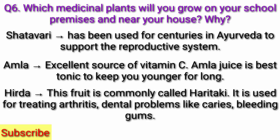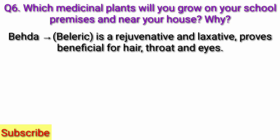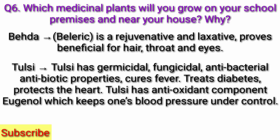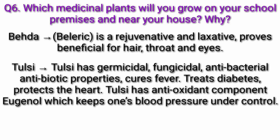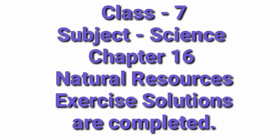Hirda (haritaki) — used for treating arthritis and dental problems like caries and bleeding gums. Beheda — a rejuvenative and laxative, beneficial for hair, throat, and eyes. Tulsi — has germicidal, fungicidal, antibacterial, and antibiotic properties; cures fever, treats diabetes, protects the heart; has antioxidant component eugenol which keeps blood pressure under control. Our class 7 chapter 16 natural resources exercise solutions are now completed.